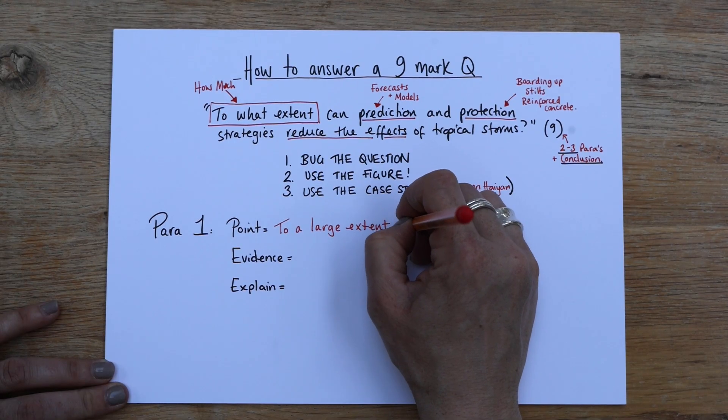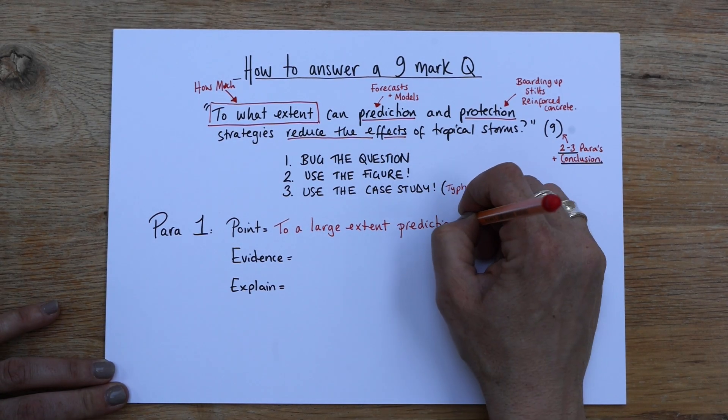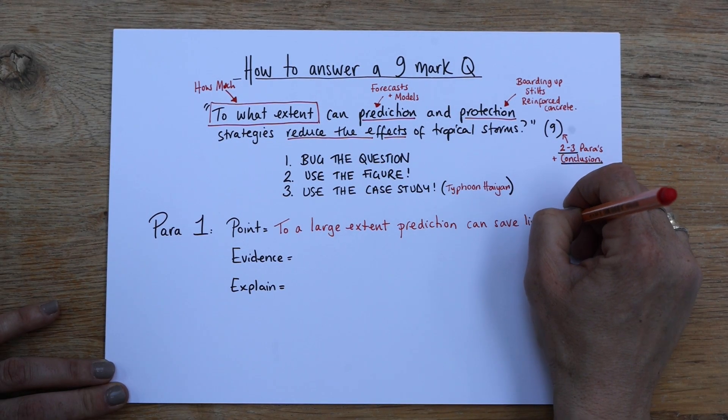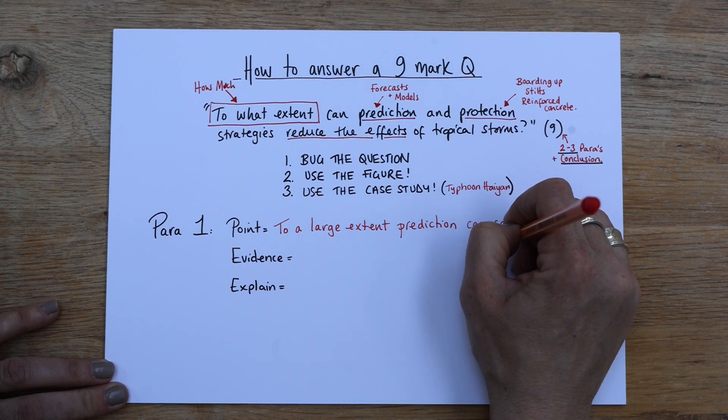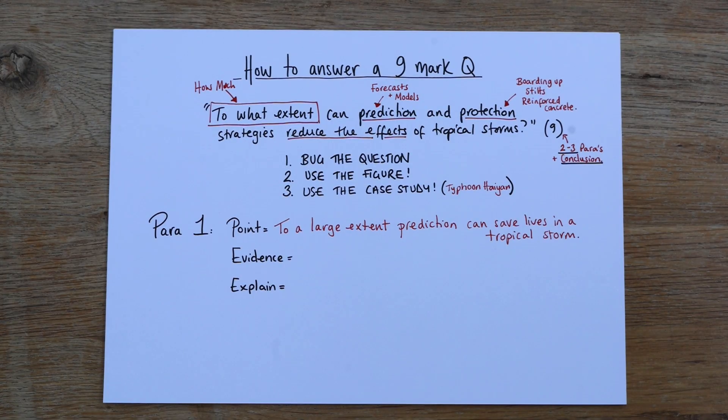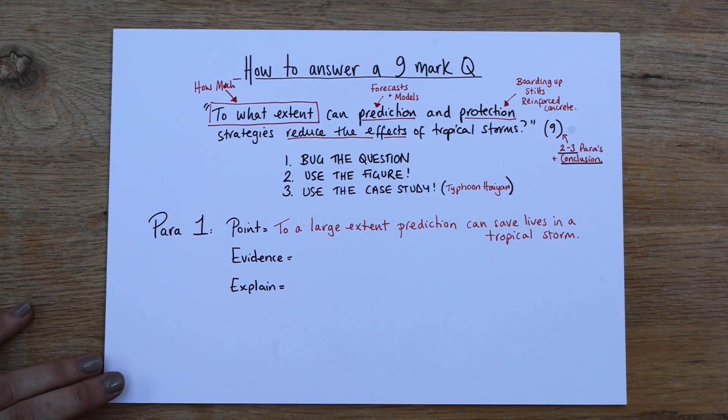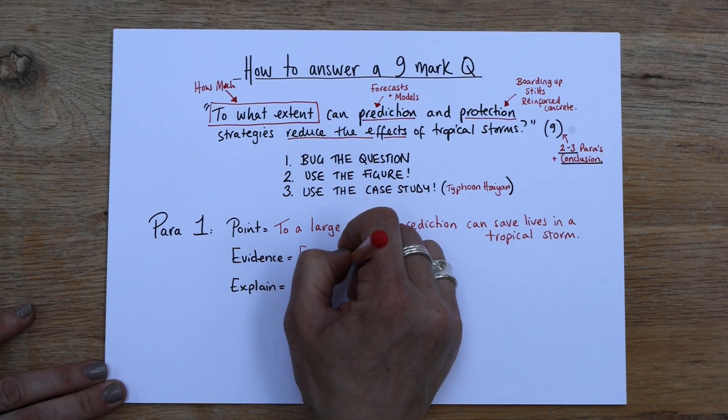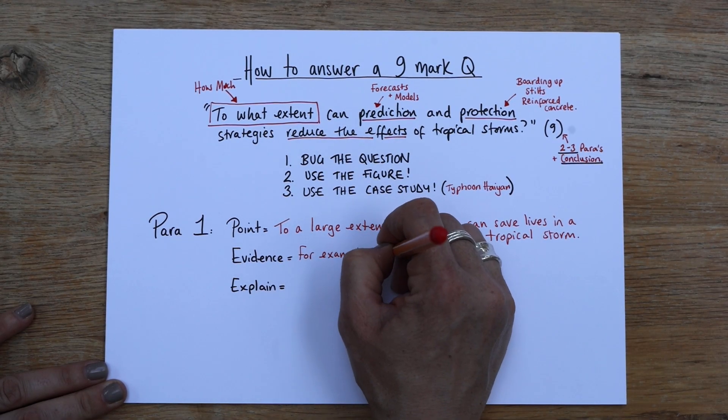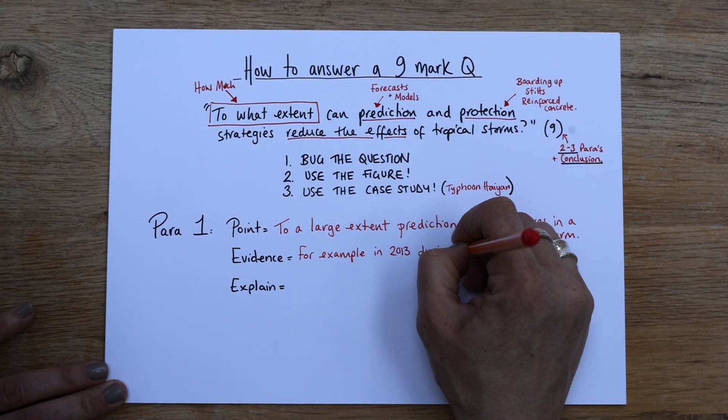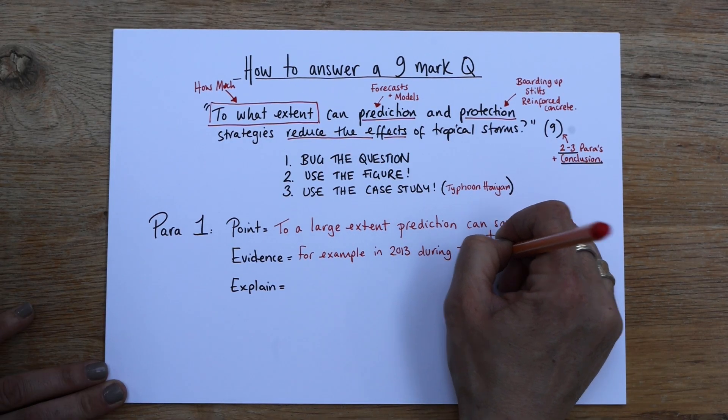So to a large extent, prediction can save lives in a tropical storm. So notice I'm not bringing in a case study. I'm not doing anything like that yet. Now I'm going to go because it is needed. So we're going to say, for example, in 2013, if you can remember the date, brilliant, if not guess, during Typhoon Haiyan.